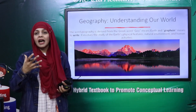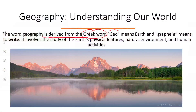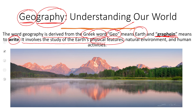Geography is derived from Greek words. It is made up of two words: 'geo' and 'graphane.' 'Geo' means Earth and 'graphane' means to write — that is, likhna. It involves the study of Earth's physical features, natural environment, and human activities.